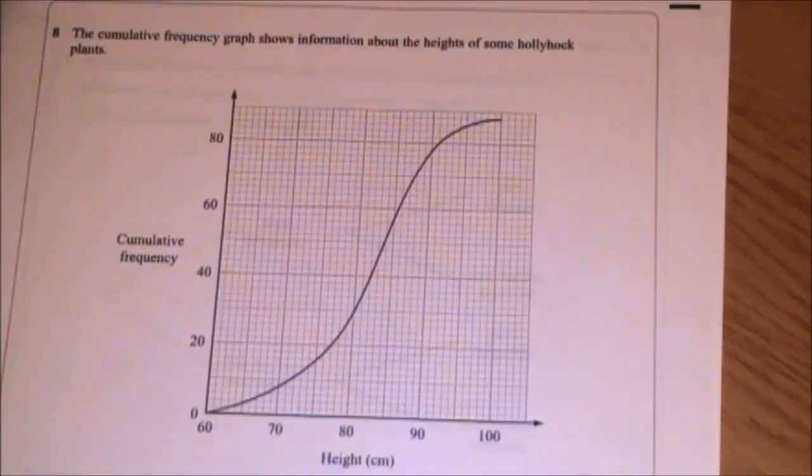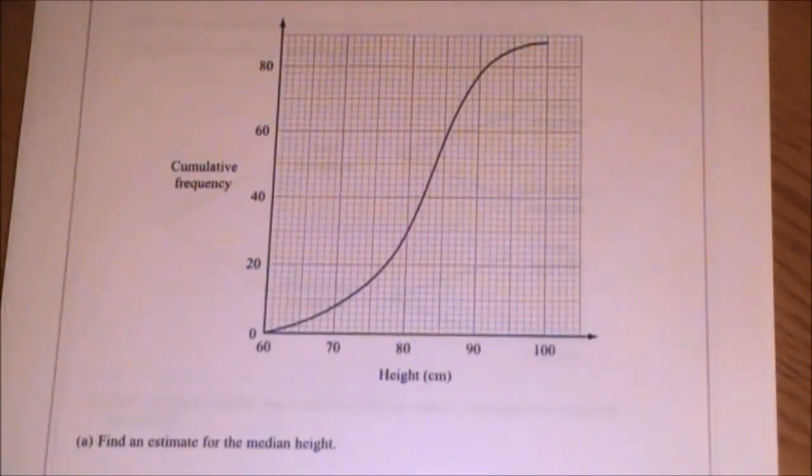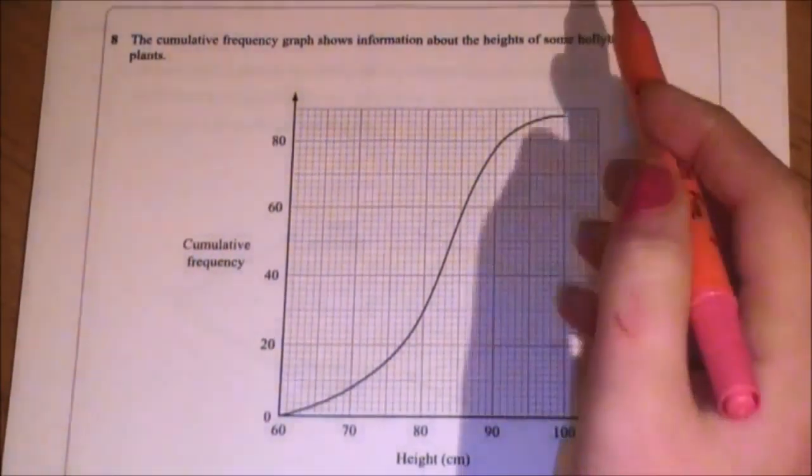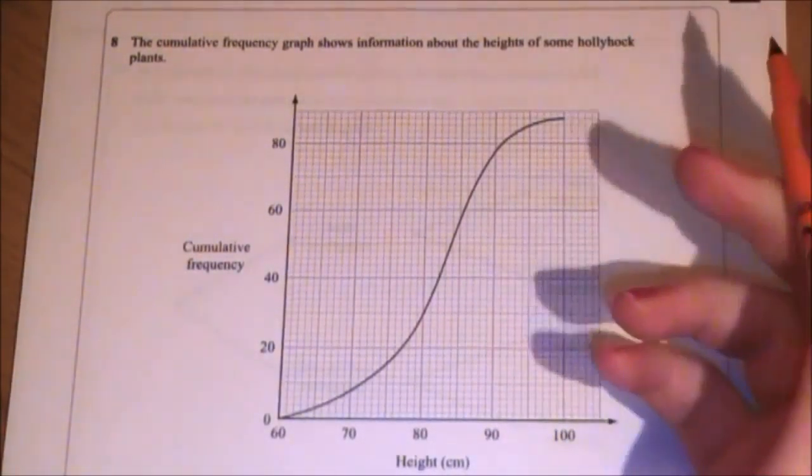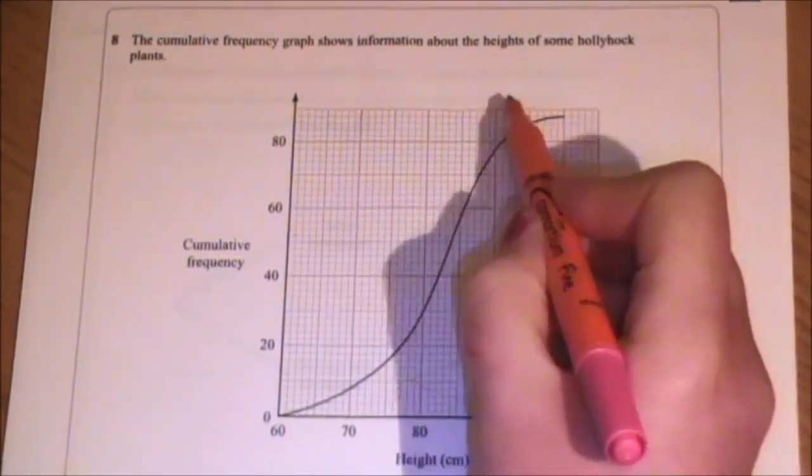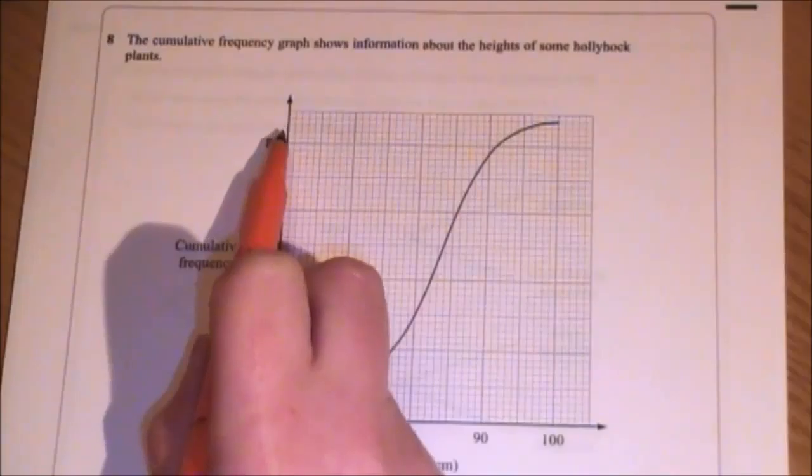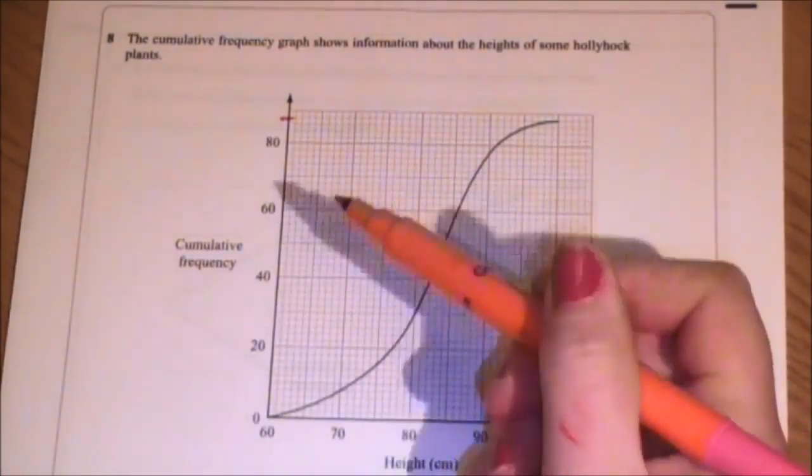Next is the cumulative frequency question. The cumulative frequency graph shows information about the heights of some hollyhock plants. That's hollyhock, not hollyhocks. Find an estimate for the median height. Generally, in a cumulative frequency graph, we're quite used to seeing them tell us how many plants that they looked at, but they haven't yet. So I need to read that information from the graph. This is the highest point on the graph, and when I read what it is, it goes to there. I need to work out what the scale is of the axis.